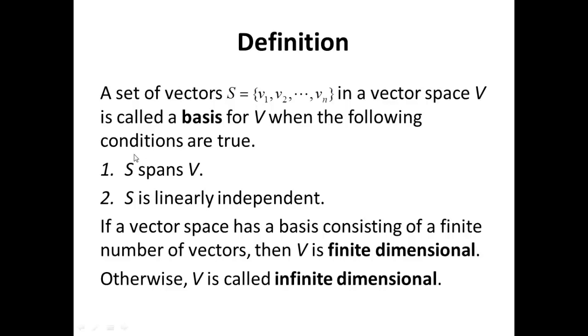Number 1, S spans V. We know what that means, i.e., for every vector in V, we can always write that vector as a linear combination of the vectors in S. Number 2, S is linearly independent.